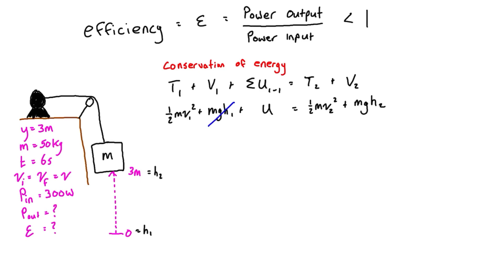This goes to zero because h1 equals zero, so the whole term does. And because v1 equals v2, since we have a constant velocity, we can subtract one-half m v squared from both sides. So those terms are going to drop off as well.